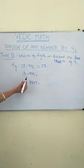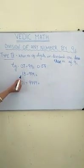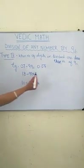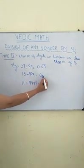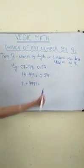But in the next one, there are three 9s but here we have only 2 digits. So 1 digit is lesser here. So your answer is going to be 0.018 with a bar.